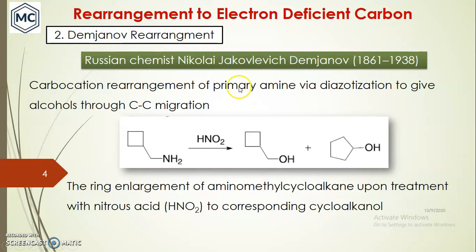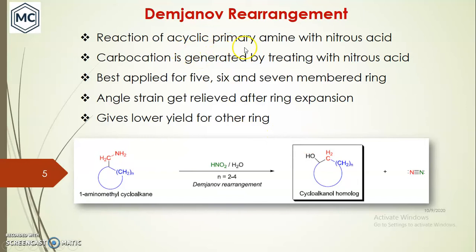The Demjanov rearrangement involves rearrangement of a primary amine. Via diazotization using nitrous acid, it finally gives an alcohol through carbon-carbon migration. In this reaction you get two types of product, and here the ring enlargement of aminomethyl cycloalkane occurs. Upon treatment with nitrous acid, aminomethyl cycloalkane gives cycloalkanone. This rearrangement is best applied for five, six, and seven-membered rings where angle strain is relieved after ring expansion; it normally gives lower yield for other ring sizes.